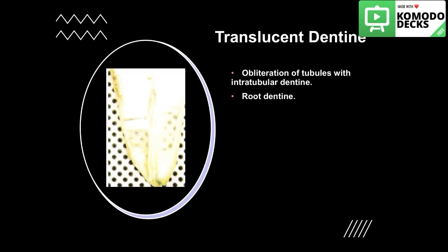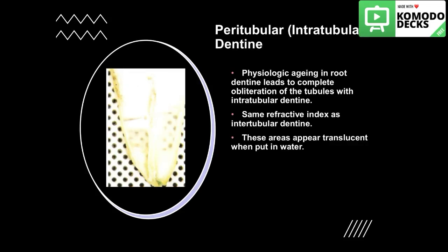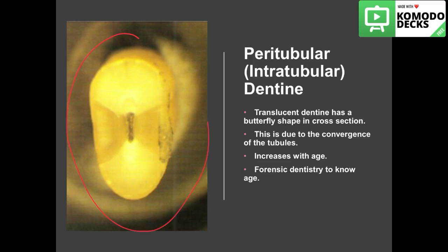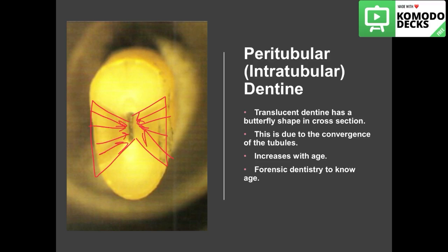Translucent dentine occurs when there is obliteration of the tubules with intratubular dentine. It happens more commonly in root dentine. Physiologic aging in root dentine leads to complete obliteration of the tubules, so the dentine will have the same refractive index as the intratubular dentine, appearing as translucent areas when placed in water. When the tooth or root is cut in cross-section, translucent dentine shows as a butterfly shape due to the convergence of the tubules. This increases with age.